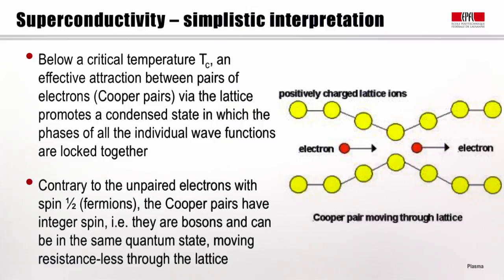Contrary to the unpaired, or normal electrons, which have spin 1/2 — the fermions — the Cooper pairs have integer spin, which means they are bosons, and therefore they can be in the same quantum state and move resistanceless through the lattice, as indicated in the cartoon on the right.